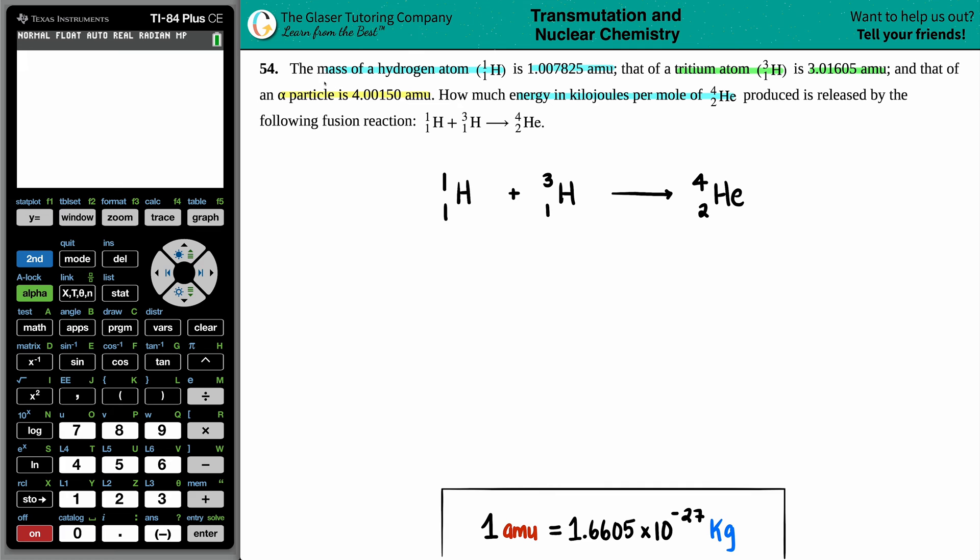Now, let's see. What did they give us? They said that the mass of a hydrogen atom, the 1-1, is 1.007825 AMU. And they also said the tritium ion is 3.01605 AMUs. And then they say that the alpha particle is 4.00150 AMUs. But remember that an alpha particle is the same thing as a 4 on top, 2 on the bottom, helium. And that's what's in here. This is technically an alpha particle.